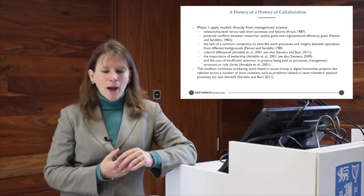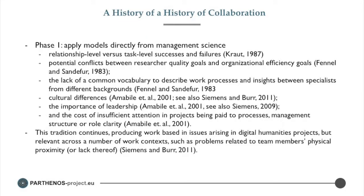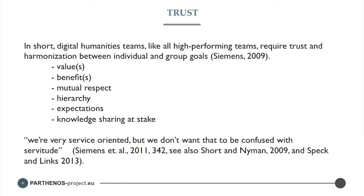This tradition continues and there's a lot of good work coming out, relevant across wide work contexts. For example, problems related to team members' physical proximity — those of us who spend a lot of time on Skype calls have a sense of how this can be a challenge within distributed teams. Digital humanities research infrastructure didn't invent the distributed team, but we do find ourselves working this way very often. What a lot of this comes down to within these large, distributed teams that make up research infrastructures is questions of trust. This is somewhere the digital humanities research infrastructure can make a particular intervention, because trust is something all high-performing teams need.